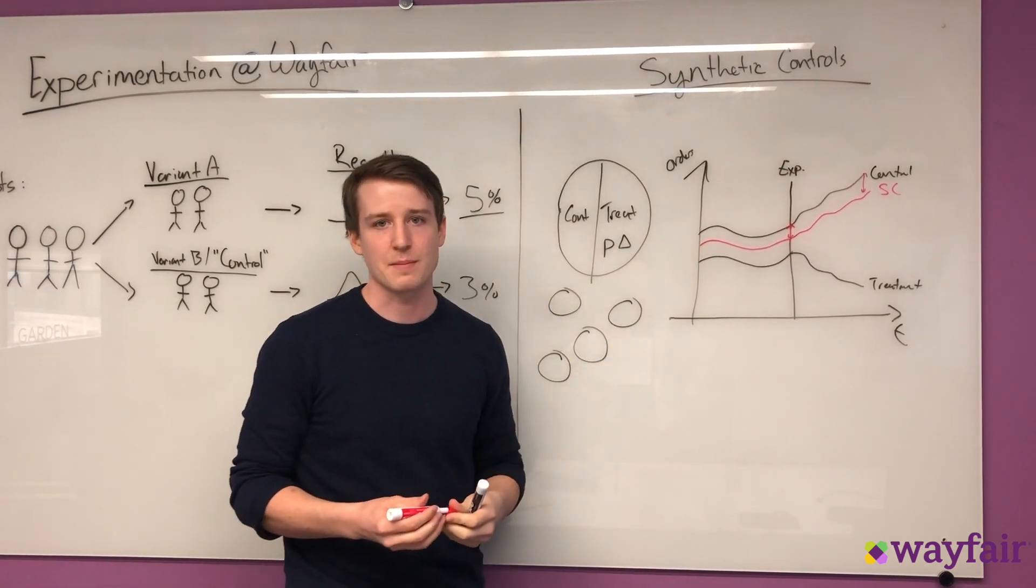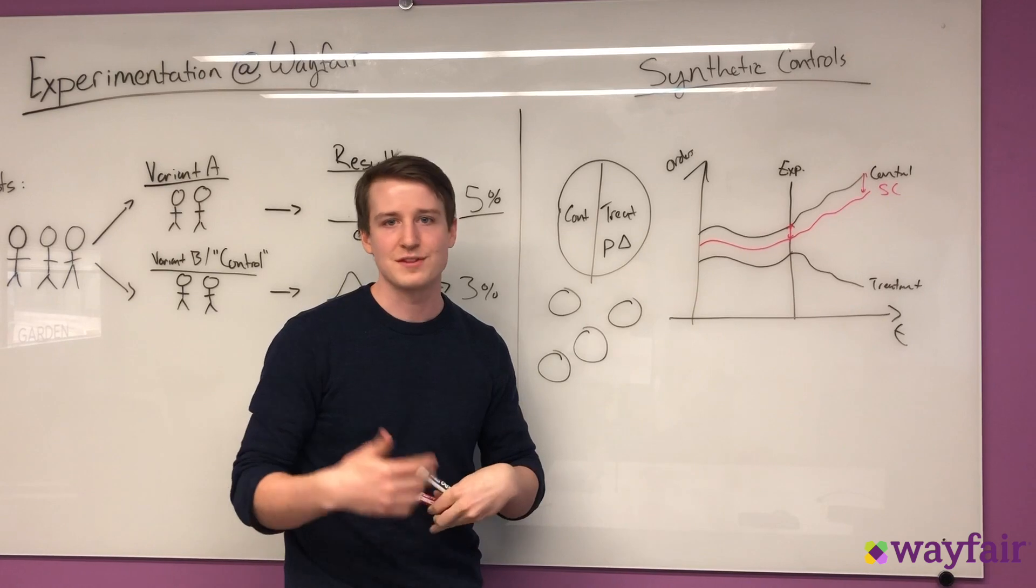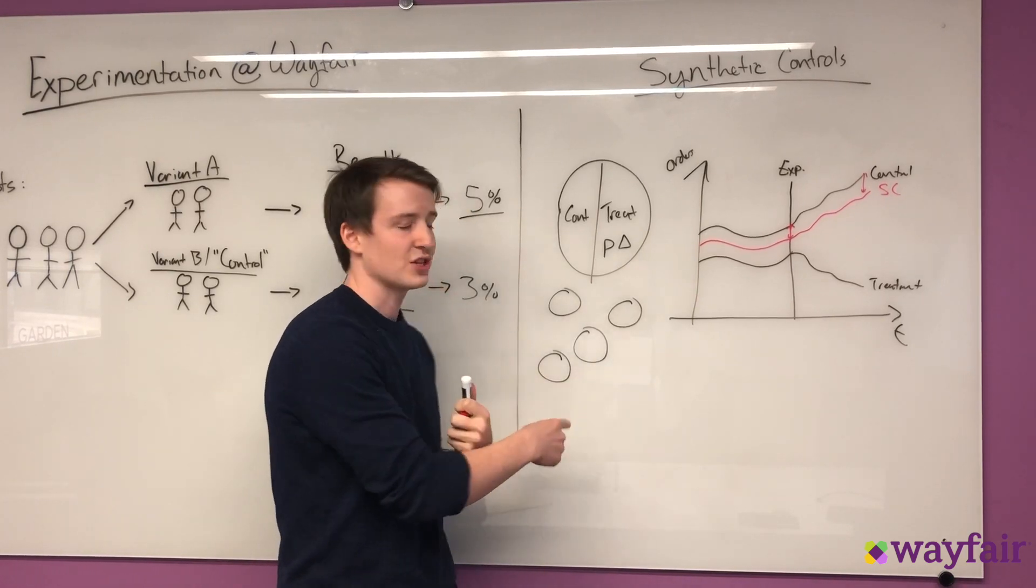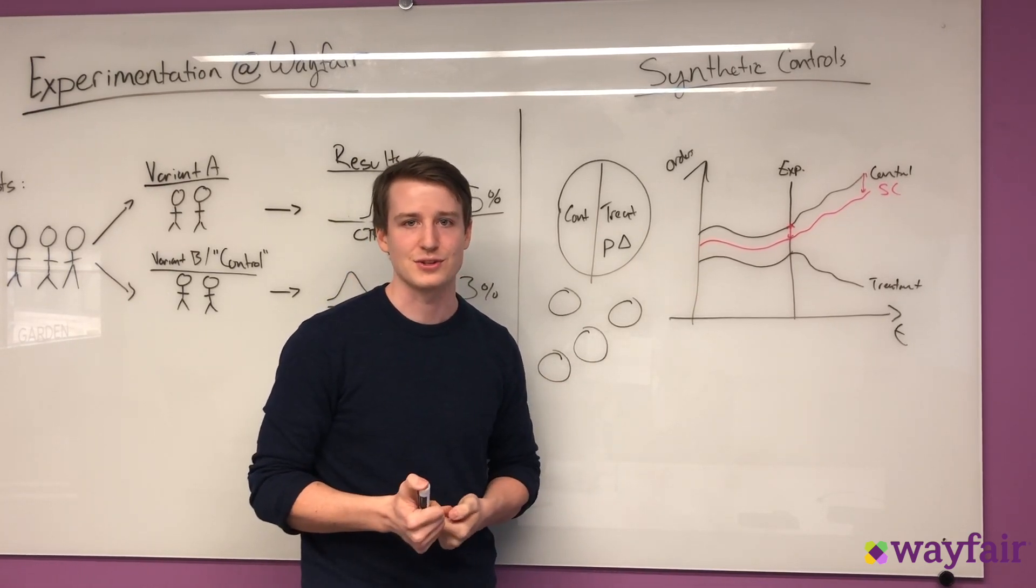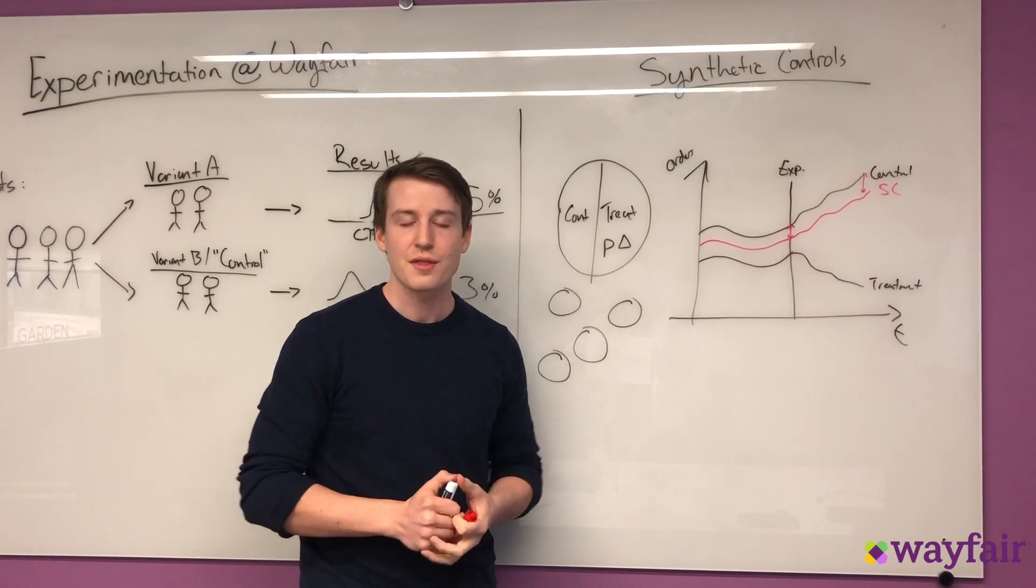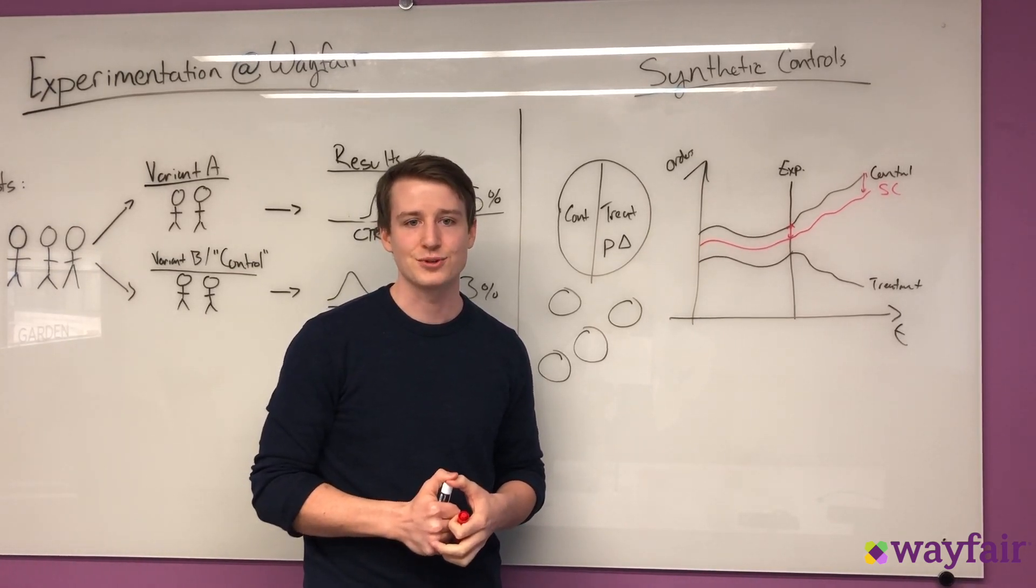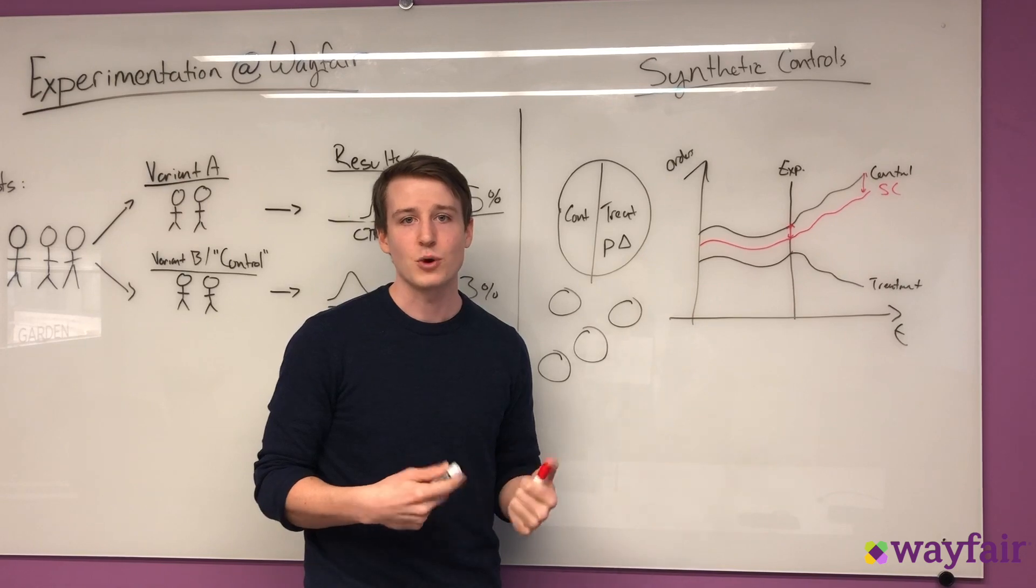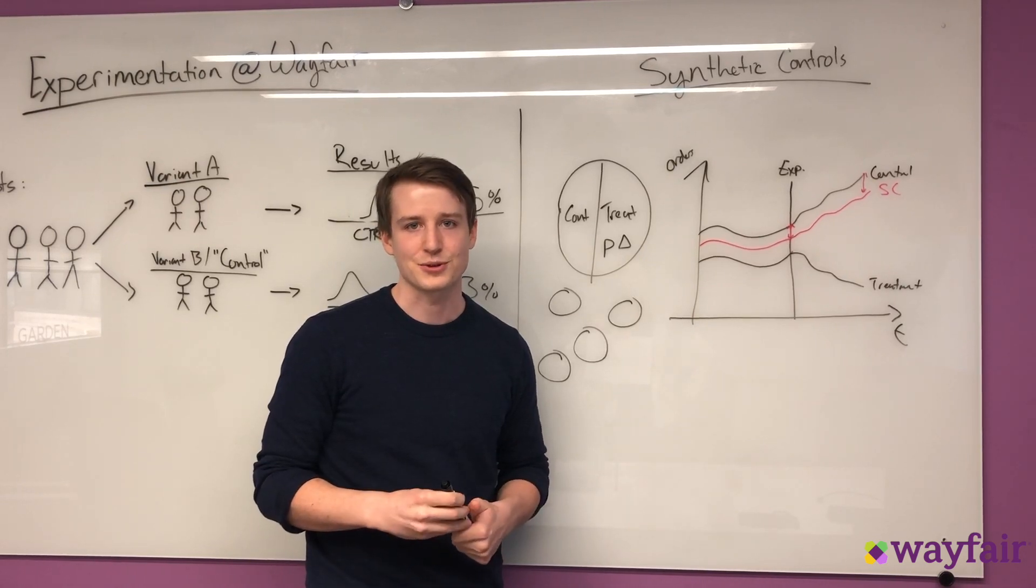And one really nice thing about Wayfair is that we have so many products, we have 15 million products, and so you can just create as many synthetic control groups as you want. So yeah, thanks for listening today. Check back soon to see about some more projects that we're working on at the data science group at Wayfair.